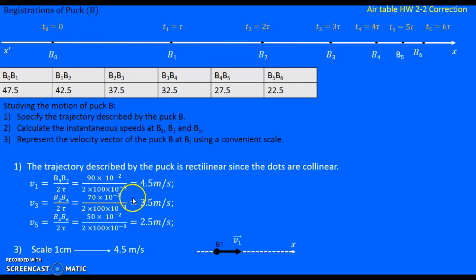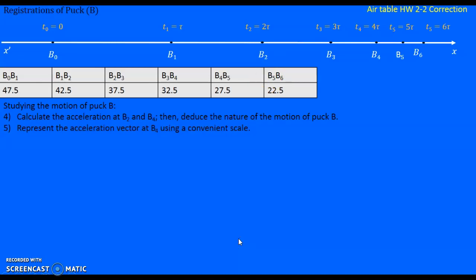Now to represent vB1. vB1 is 4.5 meters per second. We can take 1 centimeter equal to 4.5 meters per second. So starting from B1, we draw a vector of 1 centimeter length in the positive direction of X because the puck is moving in the positive direction. And we have to name it vB1 vector.